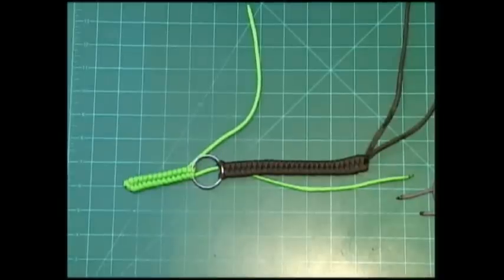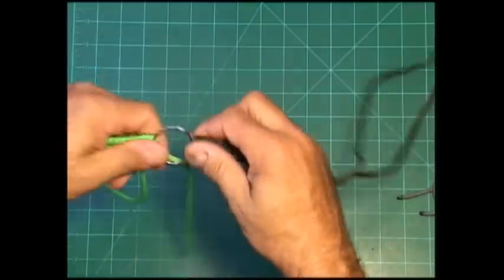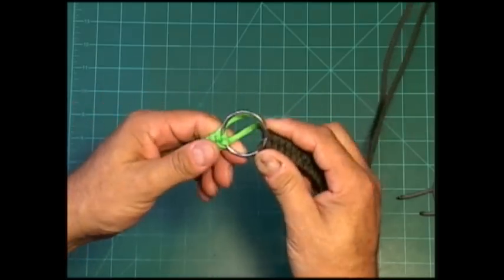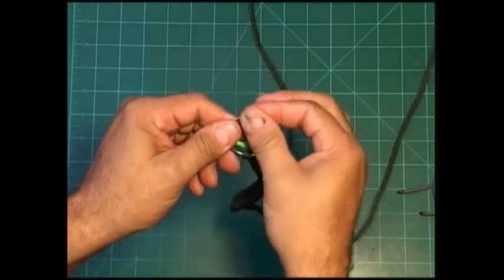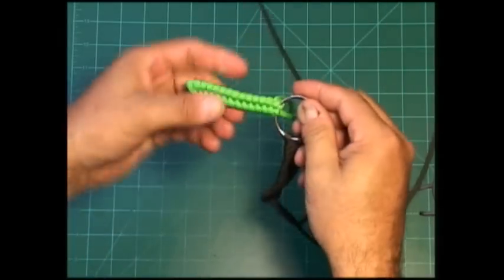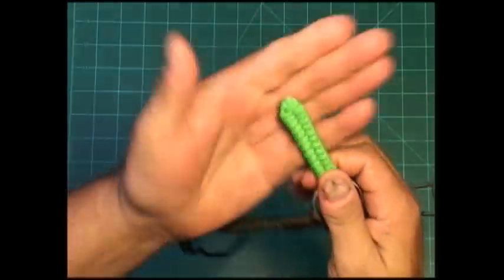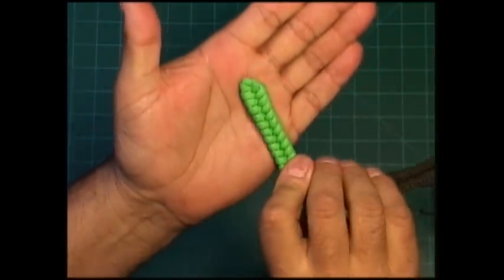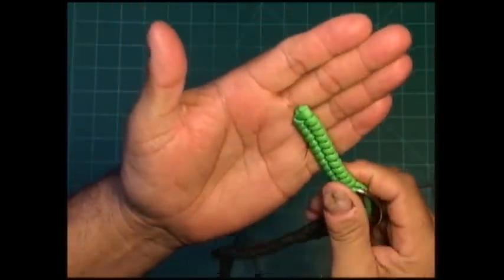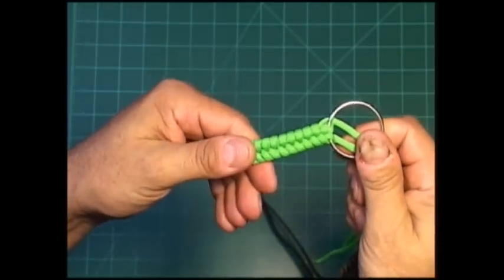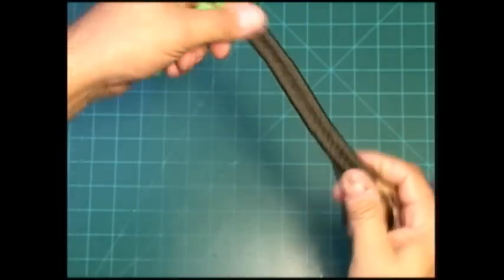Welcome back, this is the Paracord Weaver. Today I'm going to do a video for Wes who needed some information on how to make a fishtail attached to a split ring. You can attach any item, and basically what we're doing is finishing it off like this so that it's nice and clean.